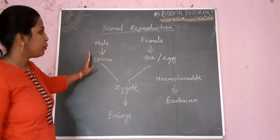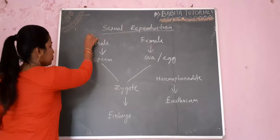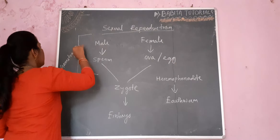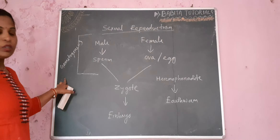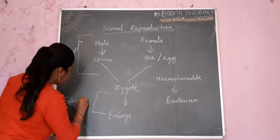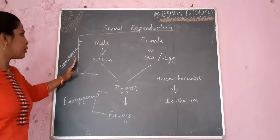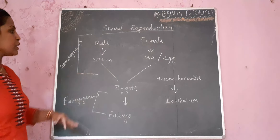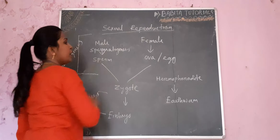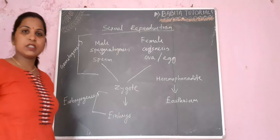The male reproductive part gives rise to sperm and the female reproductive part gives rise to the egg. They are fused to form the zygote. The formation of gametes is known as gametogenesis. The conversion of zygote to embryo is known as embryogenesis. The formation of sperm from the male is known as spermatogenesis. The formation of egg from the female reproductive part is known as oogenesis.